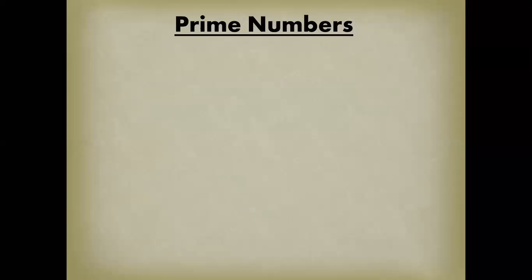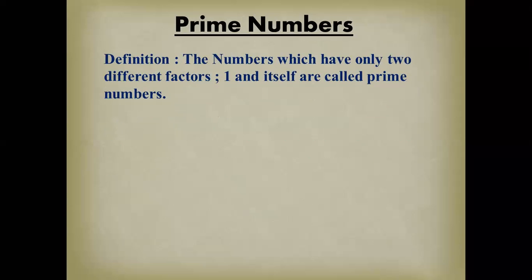Now let's move to the next topic: prime numbers. This is also easy — focus carefully. The definition: numbers which have only two different factors — one and itself — are called prime numbers. Note: this is about factors, not common factors.